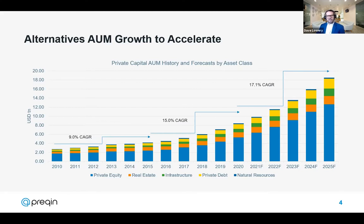Growth in the future is unlikely to be even across asset classes or geographies. Private equity stands out to deliver the strongest growth, followed by private debt and infrastructure. Asia is likely to see the strongest growth of any region, and investors are telling us in our surveys that they intend to allocate increasing amounts of capital to Asia particularly. While there was some hit to deal activity last year, this wasn't consistent across all asset classes or geographies.